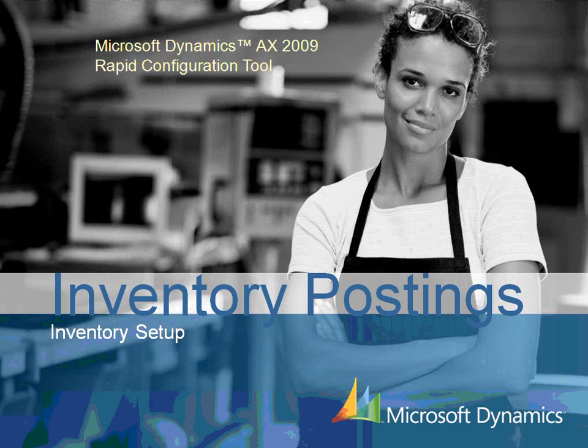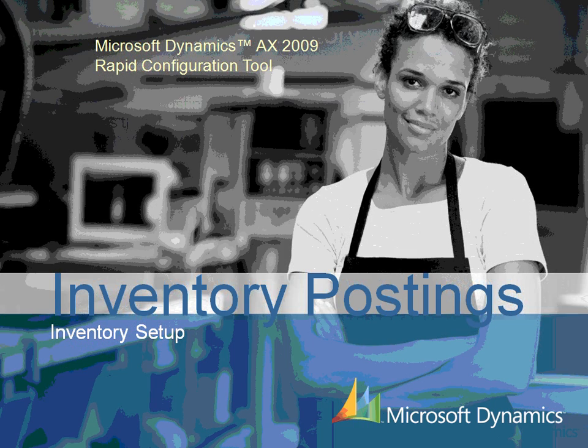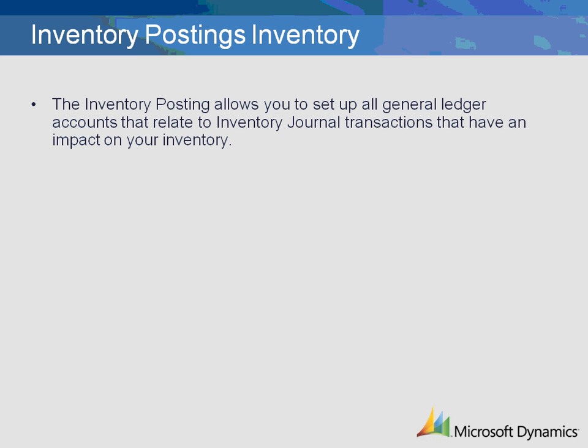This demonstration will concentrate on the setup of the Inventory tab within the Inventory Posting Table of Microsoft Dynamics AX 2009. The Inventory tab allows you to set up all General Ledger accounts that relate to inventory journal transactions that have an impact on your inventory. Within the Inventory tab, there are various types of transactions that must be set up if the functionality is going to be used.